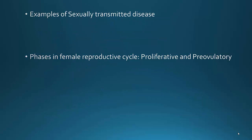Continuing with chapter 28, you need to know examples of sexually transmitted diseases. Some examples are syphilis, gonorrhea, genital herpes, and genital warts. These are not the only ones, but these are the ones that will be on your exam.